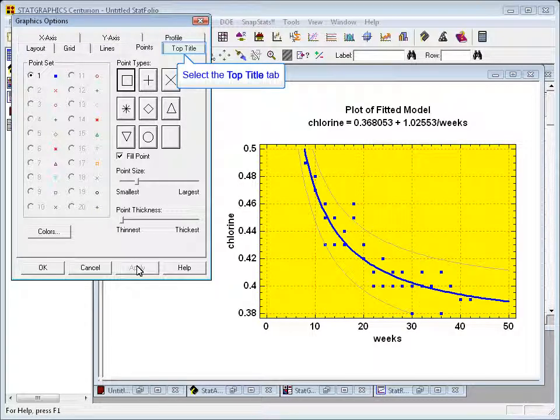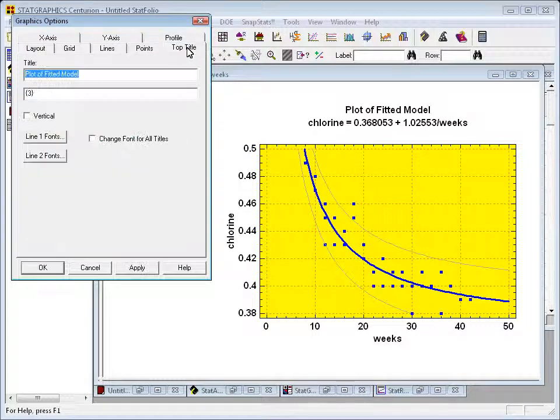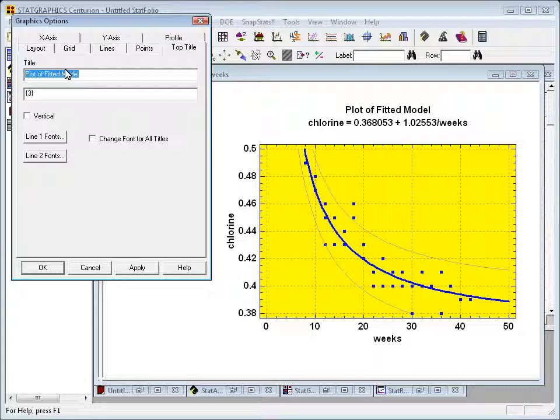If I want to change the top title, I can click on that tab and you'll see actually there are two lines for the title. The first currently says plotted fitted model. The second says brace three brace. Now, that second line brace three brace, that's an indication that the title is being automatically generated by the procedure that's being run. In this case, it corresponds to the equation of the fitted model, which I don't really want to change.